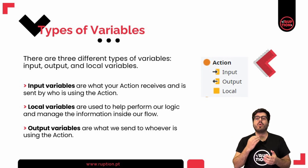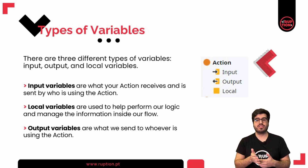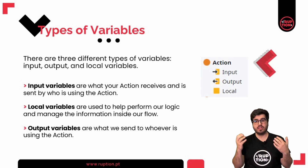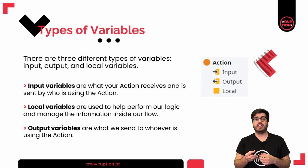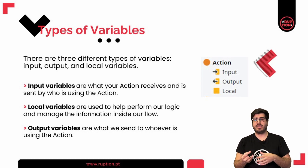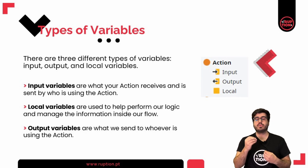Input variables are what your action receives and are sent by whoever is using or consuming this action. This can be mandatory or not. Local variables are used to perform our logic and manage information inside our flow. This information is not stored after the logic ends, and each time the logic runs, a new instance of this variable is created. Output variables are what we send to whoever is using or consuming the action. As a consumer, we will only view the input and output variables of an action. The local variables only exist in the action itself and are not visible to consumers.